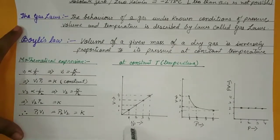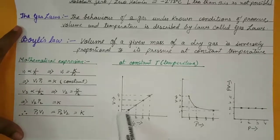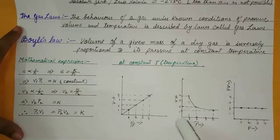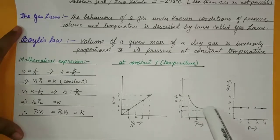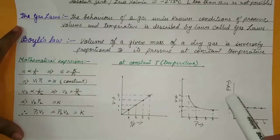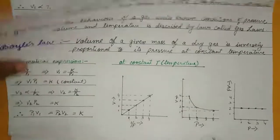For the graphical representation of Boyle's law: plotting V against 1/P gives a straight line. Plotting V against P: as V increases, P decreases. There is a maximum value beyond which pressure cannot decrease. Since PV is constant, a plot of PV against P remains constant regardless of pressure increase. This concludes Boyle's law.